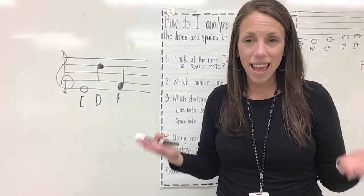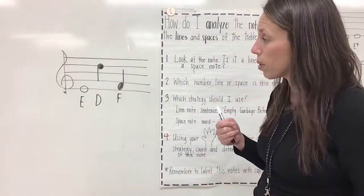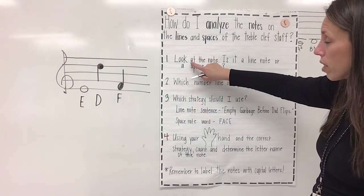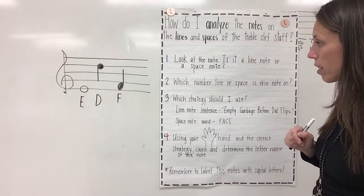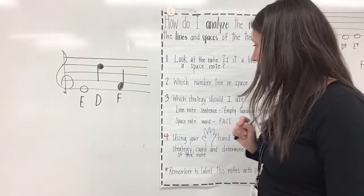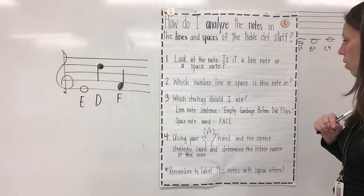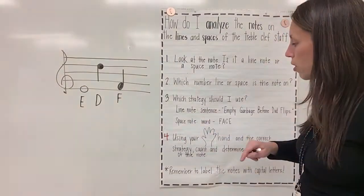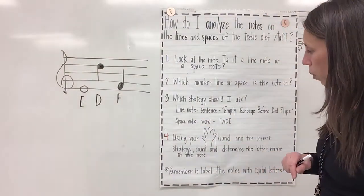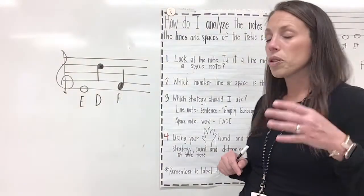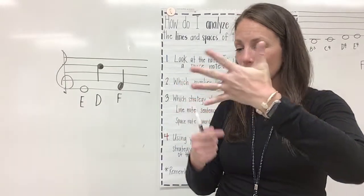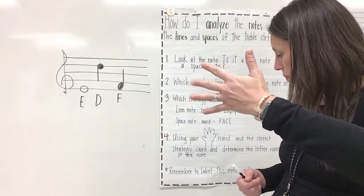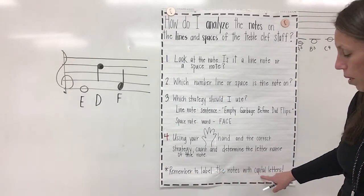So you can analyze a mixture of line and space notes on the treble clef staff, but you have to follow these steps. Make sure you're always looking at the note — is it a line note or a space note? That's the first thing you have to figure out. Then the second: which number line or space is that note on? Then third: which strategy should I use? Remember, for line notes we use the sentence, and for space notes we use the word. And step four: using your hand — that's why we've learned how to count and analyze using our hand — and the correct strategy to determine the letter name of the note. Remember to always label the notes with capital letters.